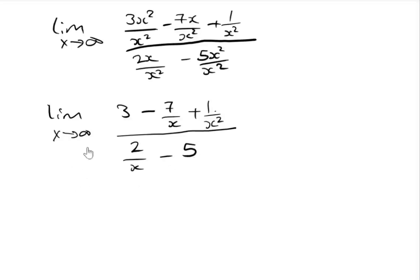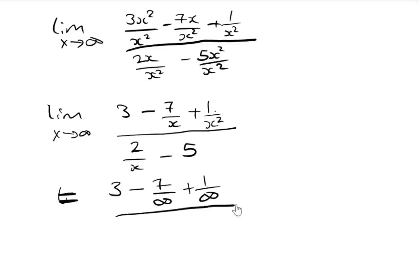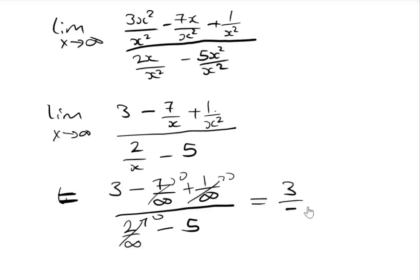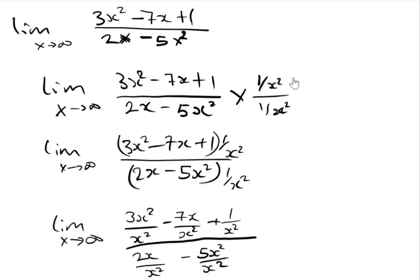Now substituting x to infinity in this expression, we have 3 minus 7 divided by infinity plus 1 divided by infinity squared, divided by 2 divided by infinity minus 5. We know that any number divided by infinity is 0, so those terms go to zero and we are left with 3 divided by minus 5. Instead of going through this route, you can just quickly divide each element by the highest power of x, which gives the same result.